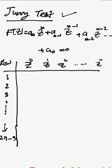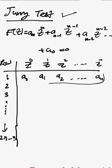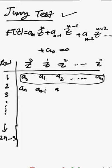You take the coefficient for z to the power of 0 and place it here, which is a0. The coefficient of z¹ will be a1, then a2, and so on up to an. The second row will be the reverse of the first row, so you write an, then an minus 1, an minus 2, continuing until a0.